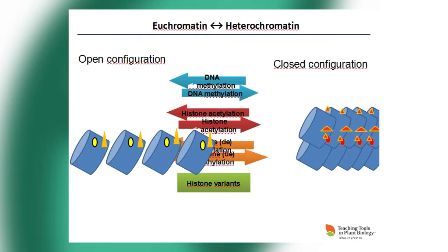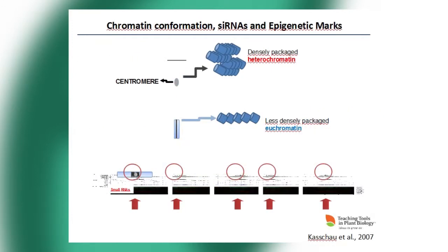There are also histone variants that can modify chromatin configuration. In general terms, we find very densely packed heterochromatin around the centromere, and euchromatin elsewhere on the chromosome where transcribed genes are found. If we look at the distribution of 24-nucleotide siRNAs, they are mostly located around centromeres — which makes sense, since this region is highly methylated and very compact.